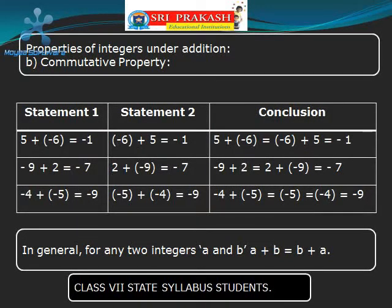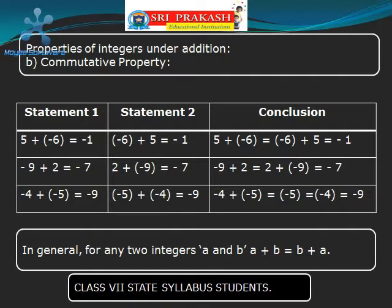Now let us check whether the Commutative Property holds good for integers under addition. Let us take two integers 5 and minus 1 and add them. The sum will be minus 1. Now let us interchange their sequence: take minus 6 first and then 5, and add. The sum is also minus 1.